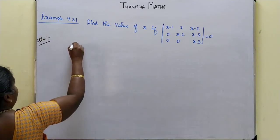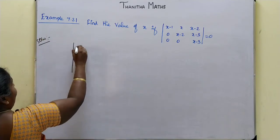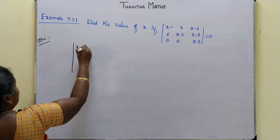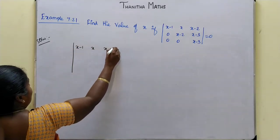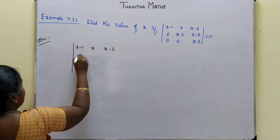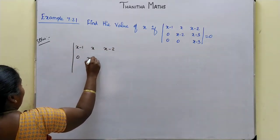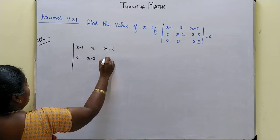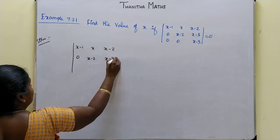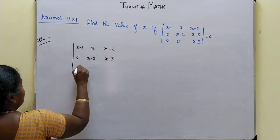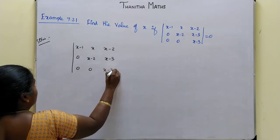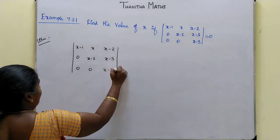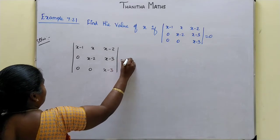You can find the determinant of the matrix: x-1, x, x-2 in the first row; 0, x-2, x-3 in the second row; 0, 0, x-3 in the third row, equal to 0.